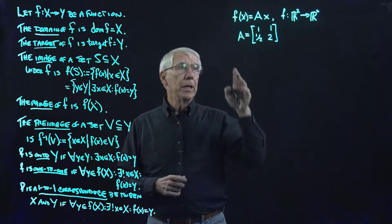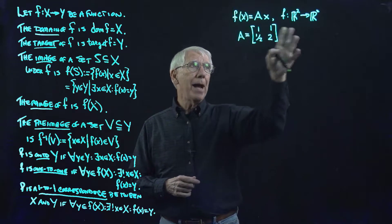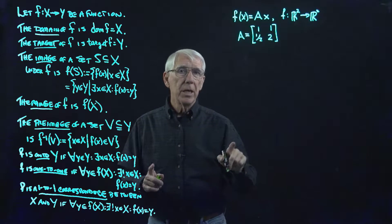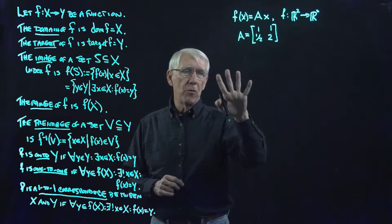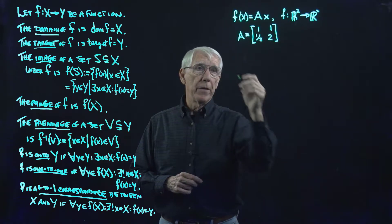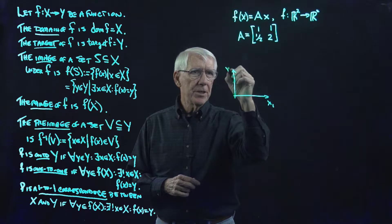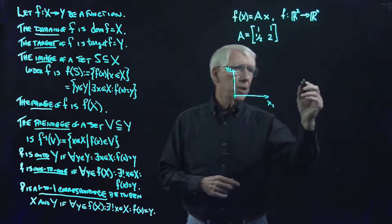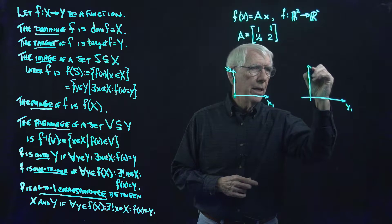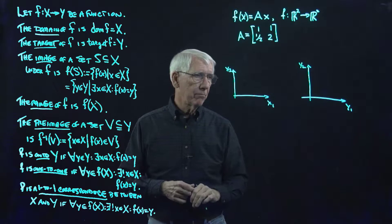For this, we can't draw the domain and the target space together. We can't draw the graph in a single diagram because the graph is four-dimensional — there's a two-dimensional domain and a two-dimensional target space. So what we're going to have to do is draw the domain and the target space separately and see how the function works going from one to the other.